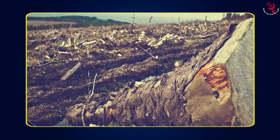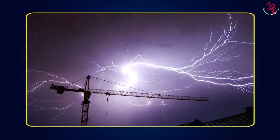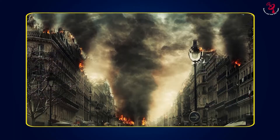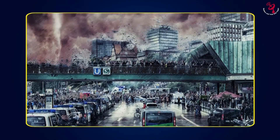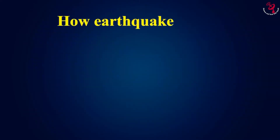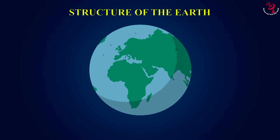There are many natural disasters occurring on Earth. Of those, the earthquake is the most terrible disaster. In this video, let's talk about how earthquakes occur. Before getting into this, let's know the structure of our planet.